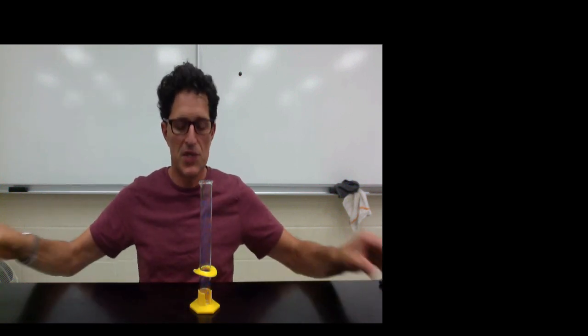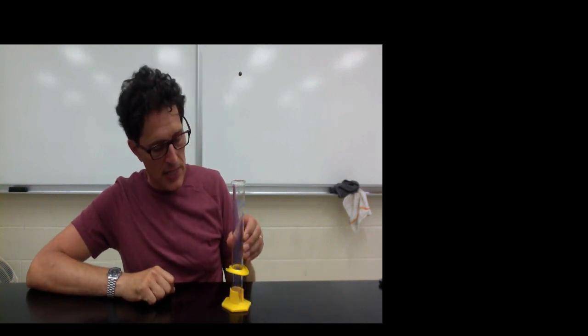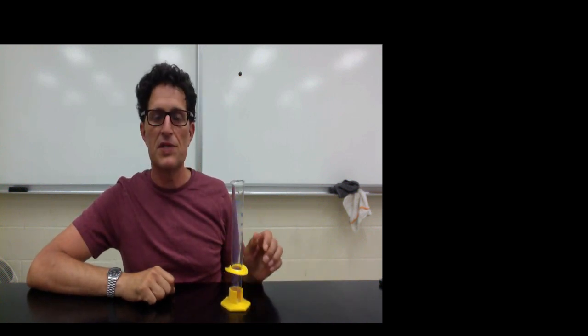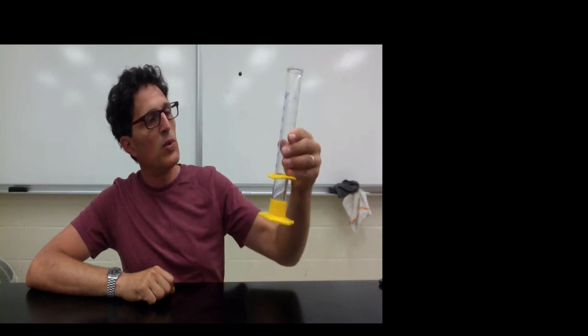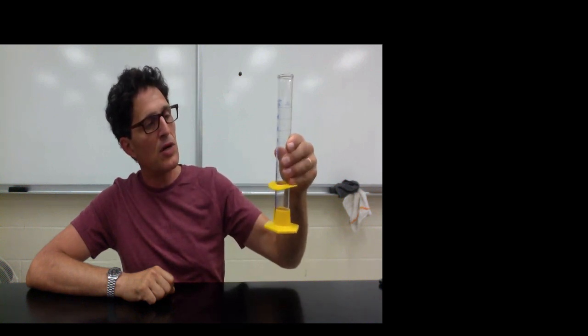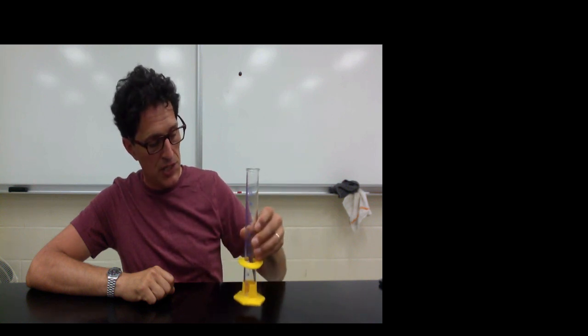When measuring volumes in a graduated cylinder it's important to pay attention to three things. First, you need to make sure that your graduated cylinder is sitting on a level surface. This is to avoid the problem of not holding your graduated cylinder correctly vertically and not reading the volume correctly. So always place your graduated cylinder on a level surface.